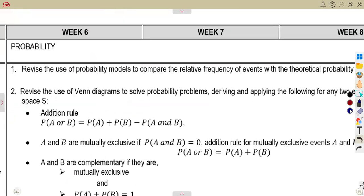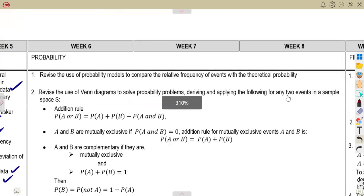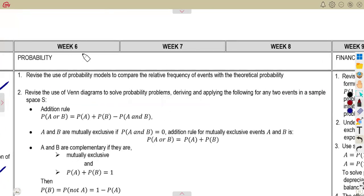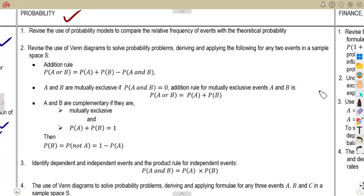Then also, we are going to need to revise or work with our probability, which is the major part. It's going to be from week six, seven, and eight, with probability, that is to revise the use of probability models to compare the relative frequency of events with theoretical probabilities, then also revise the use of Venn diagrams to solve probability problems.